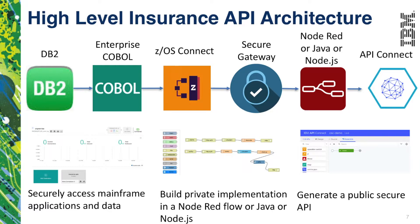Moving to the right, we have Secure Gateway, which enables us to access the APIs generated by ZOS Connect. Typically, APIs built on ZOS Connect are behind firewalls, and Secure Gateway provides a mechanism to securely call into those applications through RESTful APIs running behind the firewall. Continuing to the right, we have applications built in Node-RED, Java, or Node.js that wrap the endpoints published on Secure Gateway. Finally, on the far right, API Connect enables us to build public interfaces to securely manage who can access our APIs, the frequency of calls, and collect analytics about API performance.